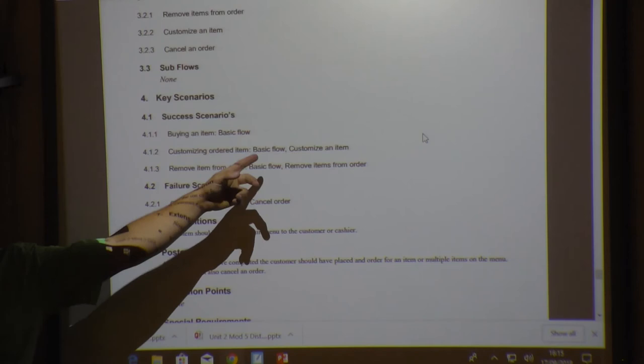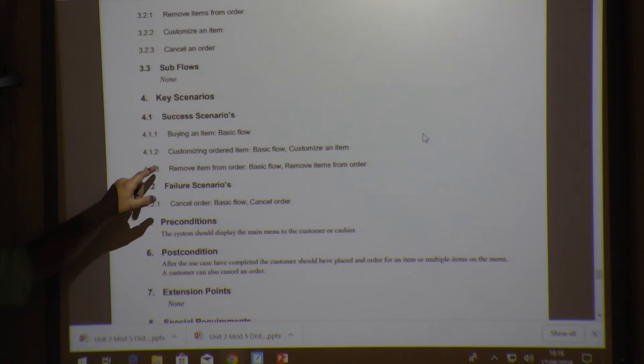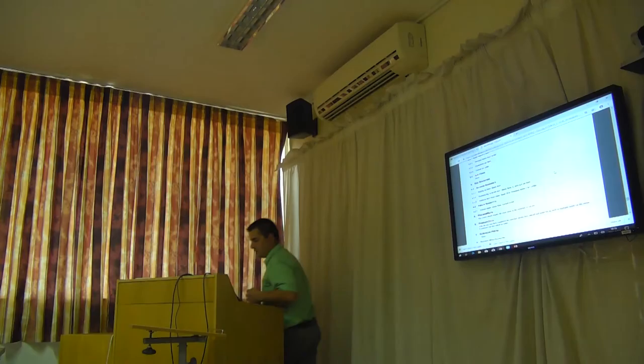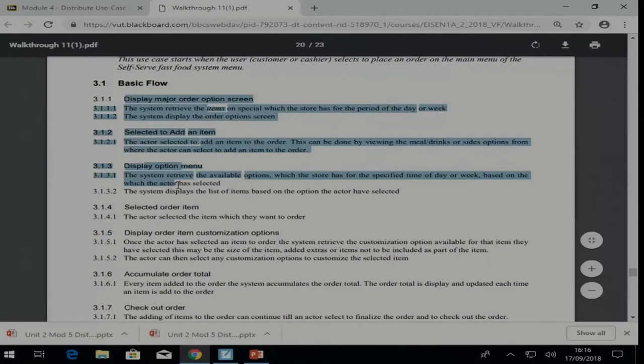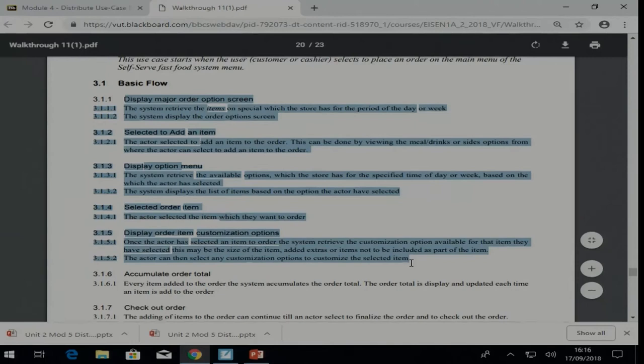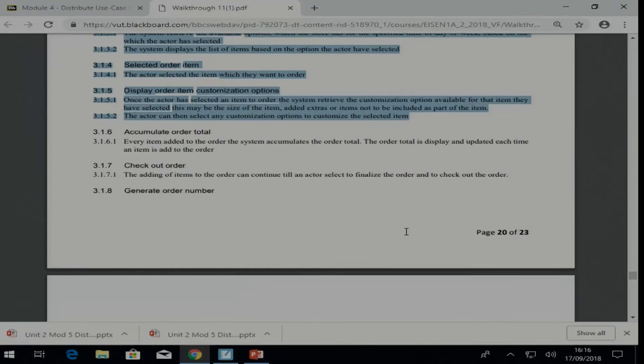But if we ask you to go and develop the customizing order item scenario, then it means that at some point you are going to have a portion of your basic flow, you might jump out to an alternative flow. You might jump out to an alternative flow, and then the use case finishes. So what we are seeing is that the customizing order item was an alternative flow here. But to do that, we would have gone through a big portion of this, and then it would have jumped out to an alternative flow, and then it might have come back to the basic flow again.